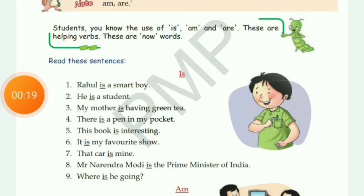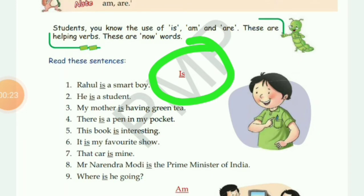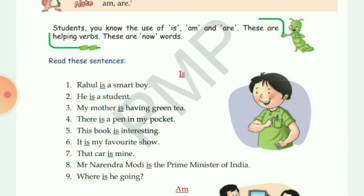First we will learn about the use of 'is' in the sentence. We use 'is' with all the singular nouns and pronouns. Nouns are the name of a person, place, animal, bird, or thing. Pronouns are words used in place of nouns — like 'he', 'she', 'it'. So 'is' is always used with singular nouns and pronouns.